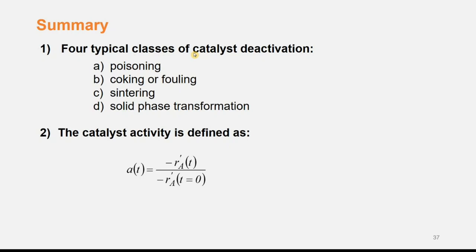To summarize Topic 6: we first looked at catalyst deactivation and described four typical classes. Poisoning is when a contaminant species chemically adsorbs on catalyst active sites, making them unavailable. Coking or fouling is when carbon or carbonaceous deposits form on the catalyst surface, blocking sites and pores. Sintering is when small metal crystals coalesce into larger ones with lower surface area-to-volume ratios. Solid phase transformation is when the catalyst structure changes, causing pores to shrink or collapse.